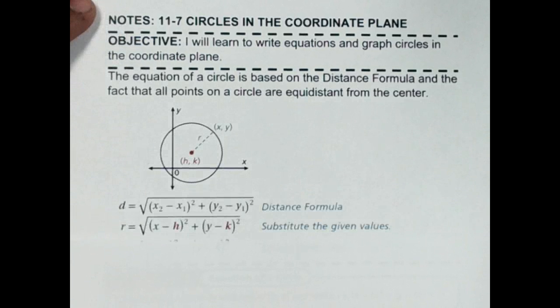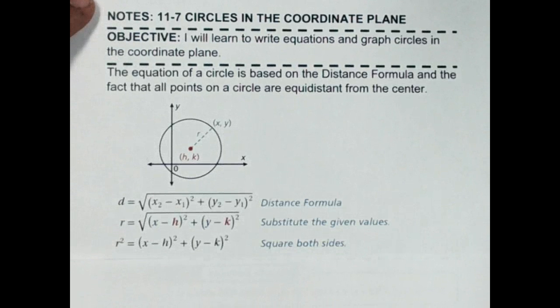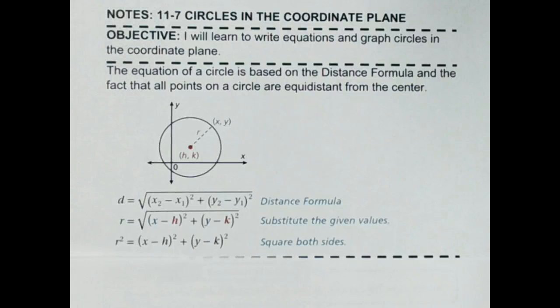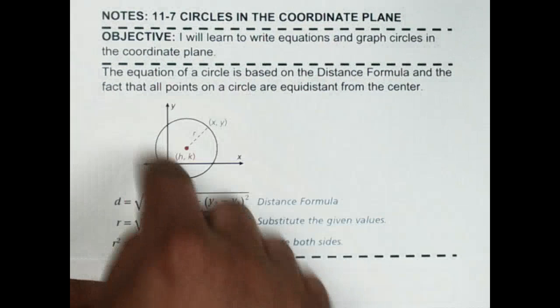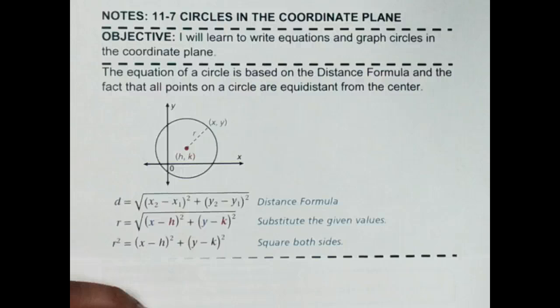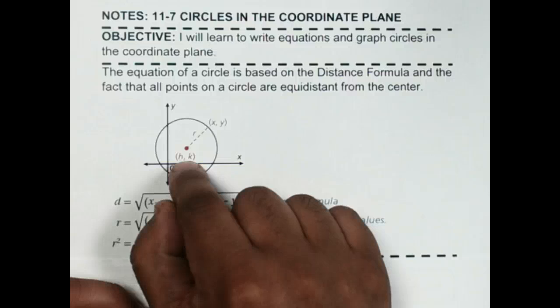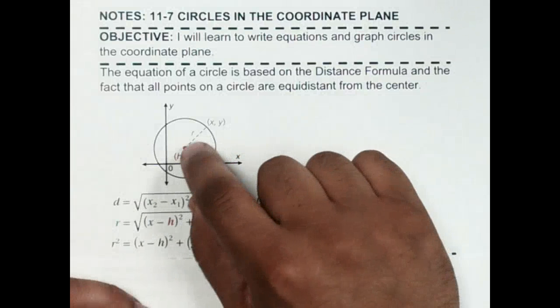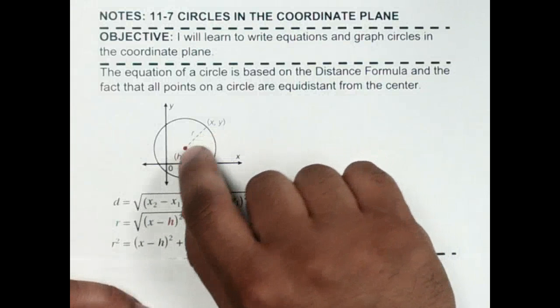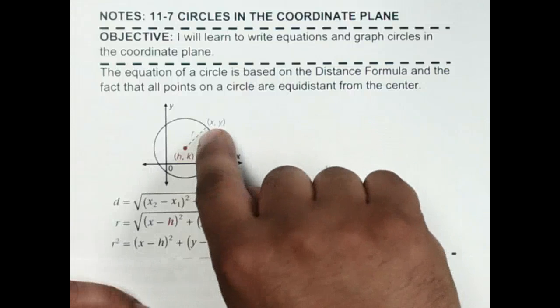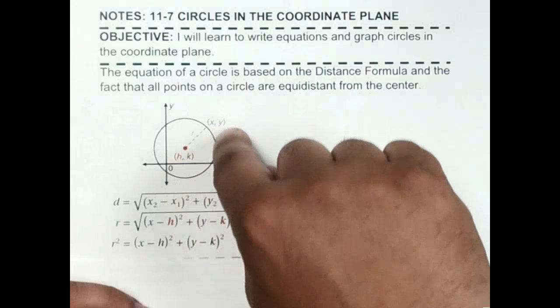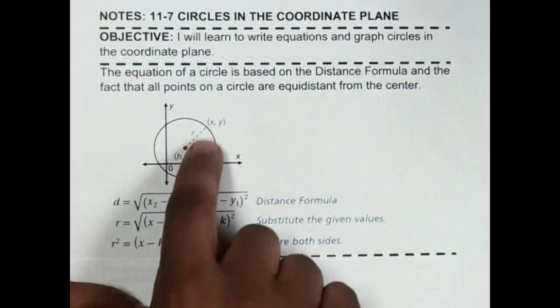So we're going to start off by deriving the formula and where it came from. If I have a circle, I have a radius and a center. We let (h, k) be the center of the circle, and then we have this radius that's going to be the actual distance from the center to any point on the circle, and we call that point (x, y). So we plug those two points into the distance formula.